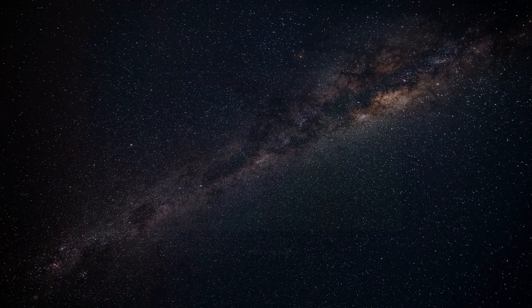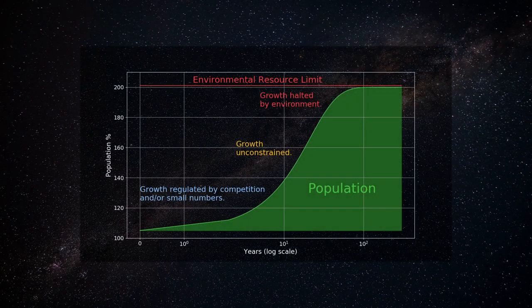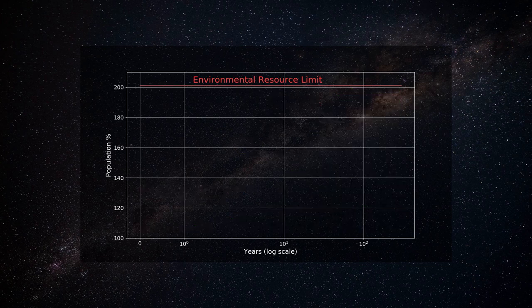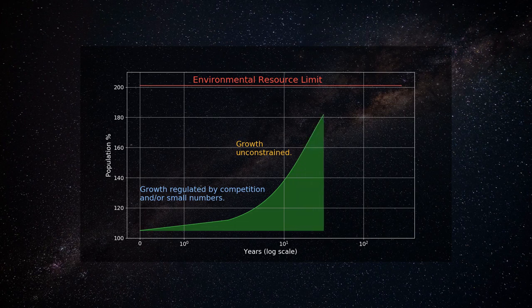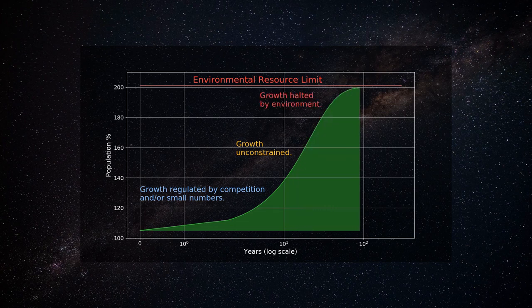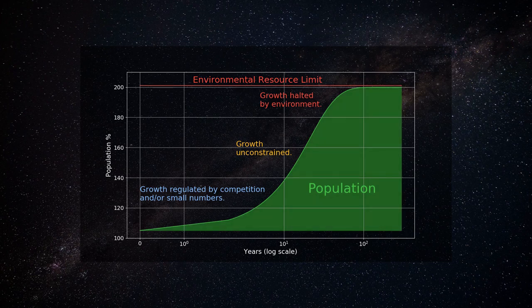Yes, but only briefly. Because of growth over time, a successful species eventually conflicts with its environment. This graph shows how such a species evolves. At first, competition and limited numbers prevent rapid growth. Then there's a period of fast growth with no constraints. Finally, the species collides with resource limits and deaths equal births. This is a typical species history.